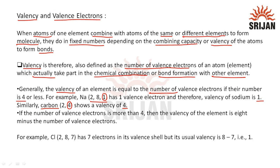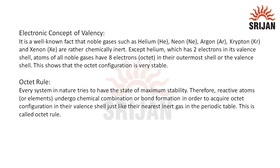If the number of valence electrons is more than 4, then the valency of the element is 8 minus the number of valence electrons. For example, chlorine has the electronic configuration 2, 8, 7, so it has 7 valence electrons. Its valency will therefore be 8 minus 7, which equals 1.